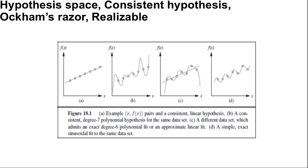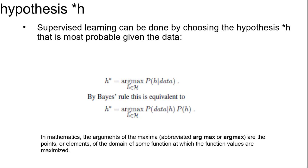In figure d, when we expand the hypothesis space H to allow polynomials over both x and sin(x), we find that the data in c can be fitted exactly by a simple function of the form ax + b + c·sin(x). This shows the importance of the choice of hypothesis space. We say that a learning problem is realizable if the hypothesis space contains the true function. Unfortunately, we cannot always tell whether a given learning problem is realizable because the true function is not known.